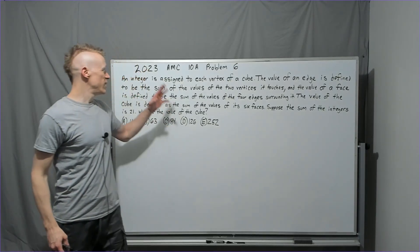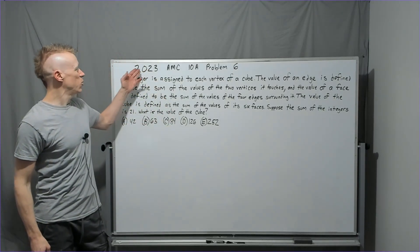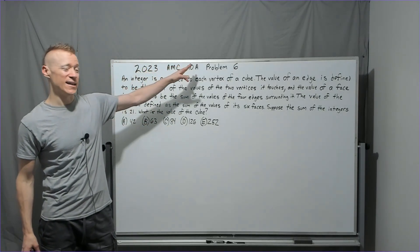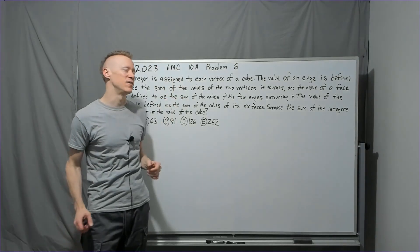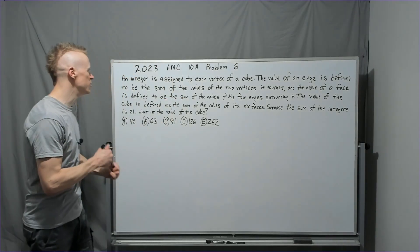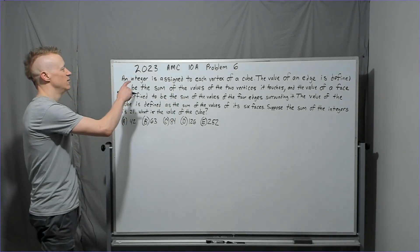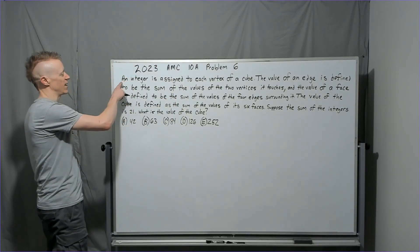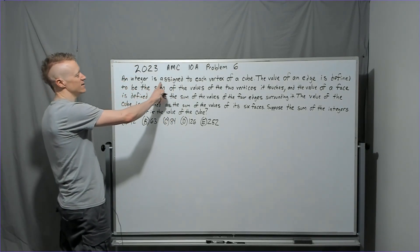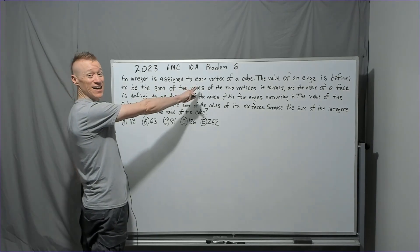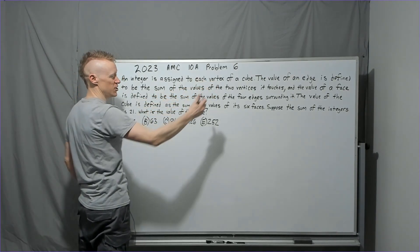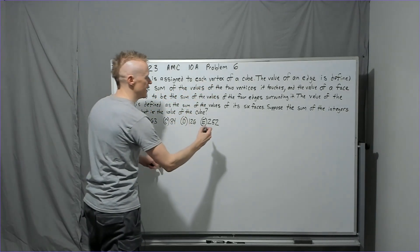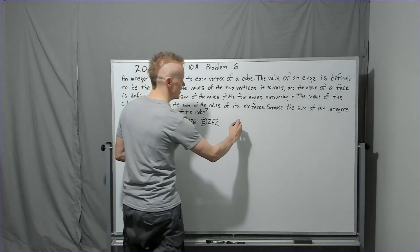Continuing, we start the 2023 10A problem six — a set of five questions we'll do in a row for this rapid fire. An integer is assigned to each vertex of a cube. Let's draw a cube to get started.